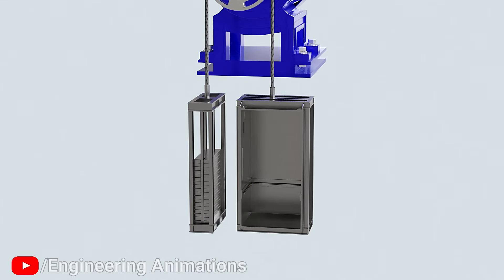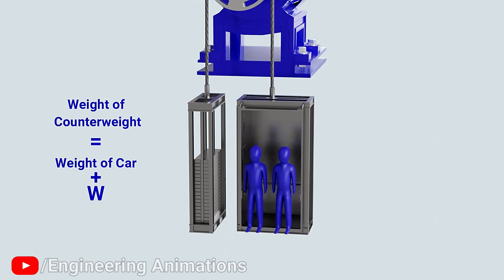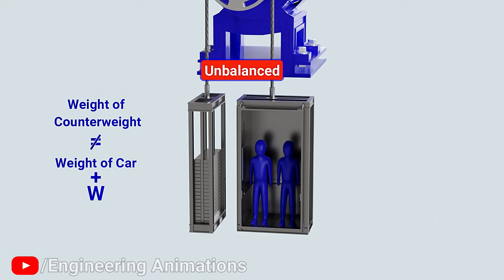Now let's discuss how the weight of counterweight is determined. For a balanced system, the weight of counterweight should be equal to the weight of elevator car. When some load is added to the car, same weight should be added to the counterweight to balance the system. But we can't simply change the weight of counterweight for each loading conditions. This means the system will remain unbalanced most of the time. So the job of counterweight is just to reduce this imbalance to minimum.